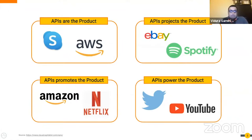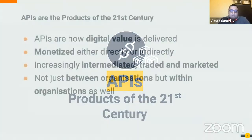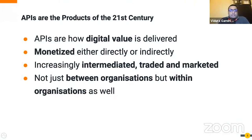Some organizations use APIs to promote the product — using an API to advertise through different channels or allow third parties to access data to generate interest, like Amazon and Netflix. In some cases, APIs power the product, where the API is a channel to get new content value into the business, continuously receiving new content that becomes part of the service, like YouTube, Twitter, and Facebook.